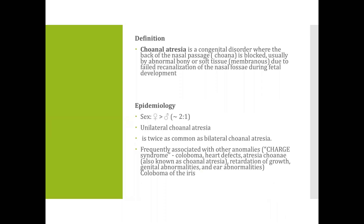Choanal atresia refers to a congenital disorder where at the back of the nasal passage the choana is blocked, usually by abnormal bony or soft tissue which may be membranous, due to failed re-canalization of the nasal fossa during fetal development.